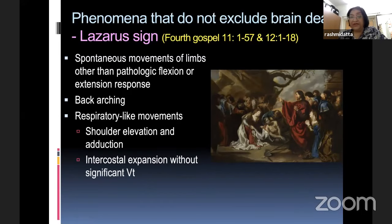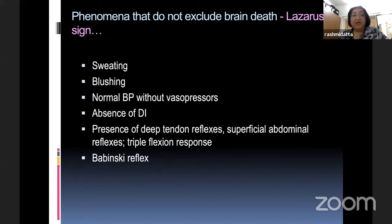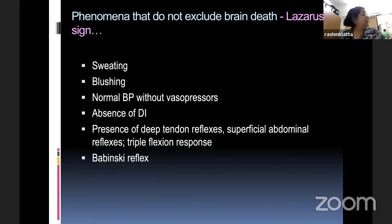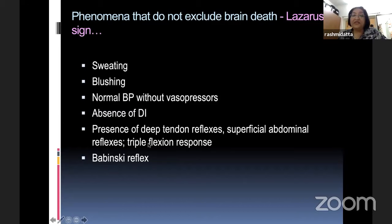The tests for brainstem functions include the cold caloric test — COWS: cold opposite, warm same for nystagmus — done with 50 ml, being careful not to damage the tympanic membrane. The various cranial nerves are tested, including the vagus, using the atropine test, along with a whole lot of other tests for all cranial nerves.